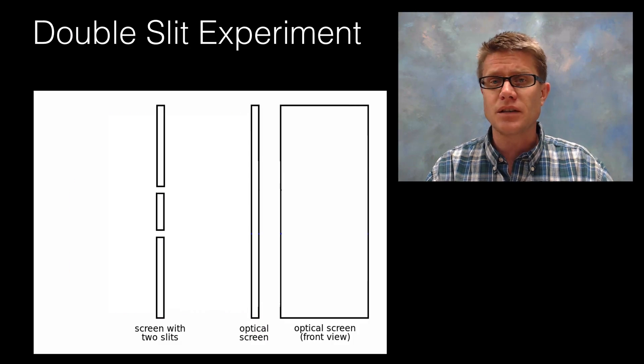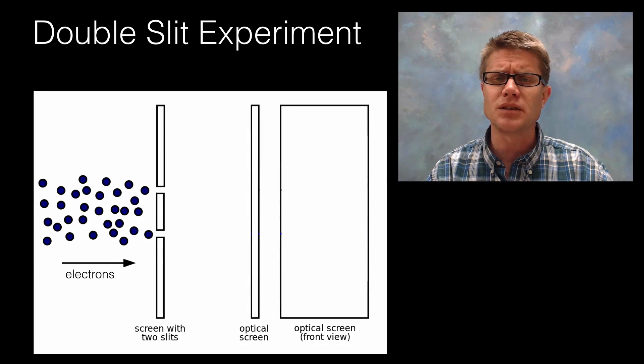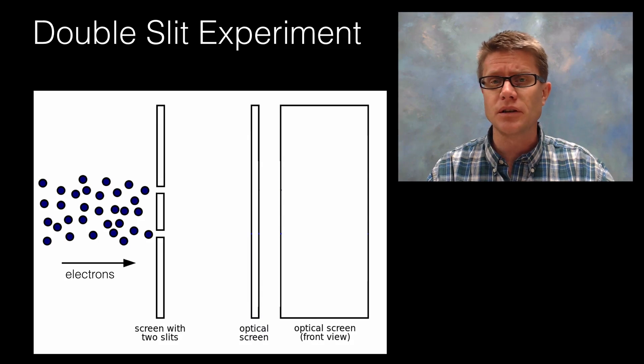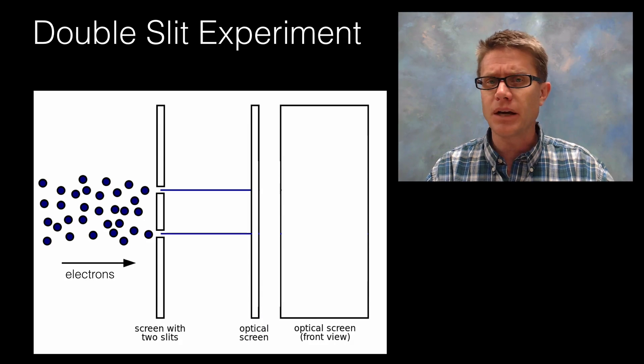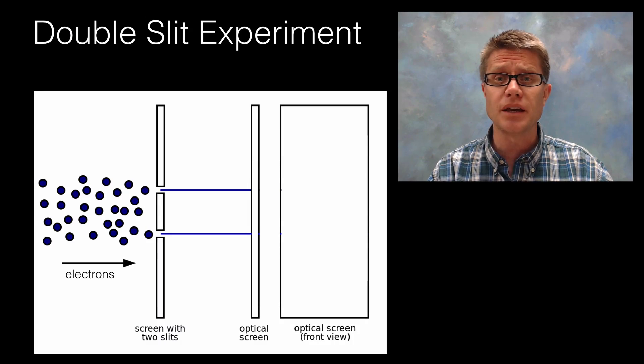And so then scientists said well let's look at something very, very small. Let's look at an electron. Which we tend to think of as being a particle. And so let's shoot particles through this double slit experiment and see what we see on the other side. So you might imagine they're going to move through. If we turn it towards you you might think it would look just like those marbles or that spray paint did.